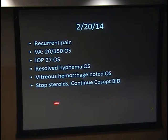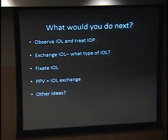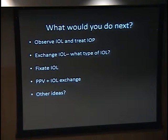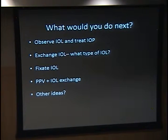We treated him with steroids, IOP-lowering agents, and cycloplegia for the hyphema, then asked him to return shortly to evaluate whether to reposition the IOL. He came back a few days later with recurrent pain, visual acuity dropped to 20/150, pressure still elevated, hyphema resolved, and we noted a vitreous hemorrhage on dilated exam. We stopped the steroids and continued Cosopt. I want to ask the audience: from an anterior segment perspective, what would you do next for a patient with hyphemas, pigment dispersion, recurrent pain, pressure spikes, and a subluxed IOL in the sulcus?